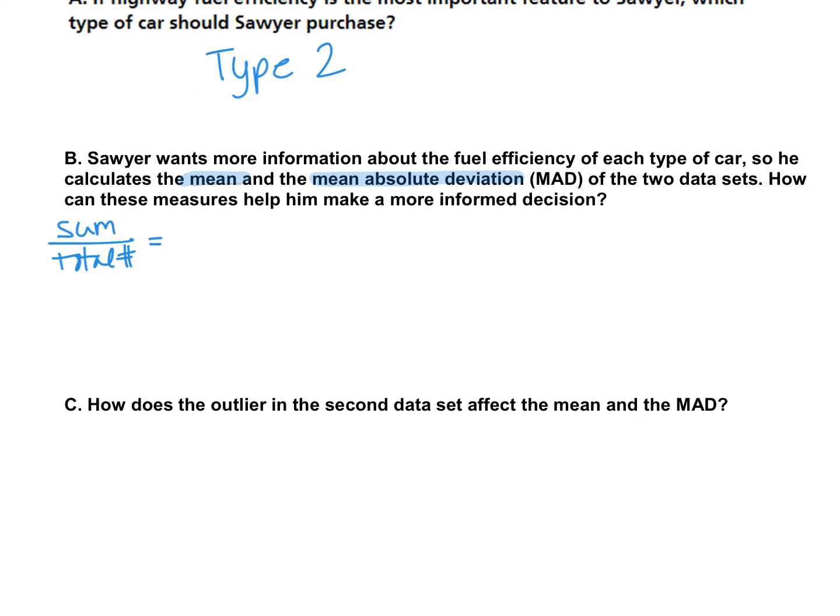So to find the mean of the type one car, we would add up all those values and the sum of type one - type one - the total is 572 and there were 16 cars. So that gives us a mean of 35.75.